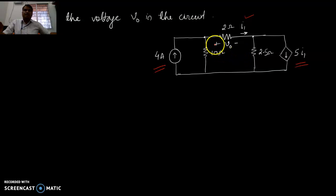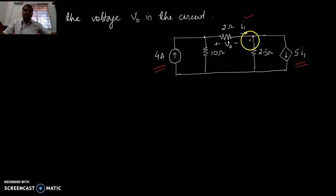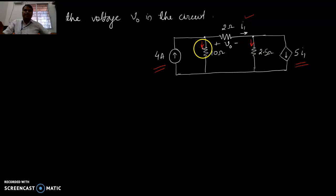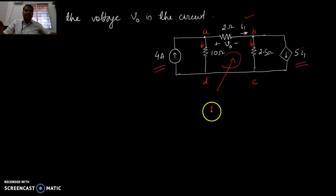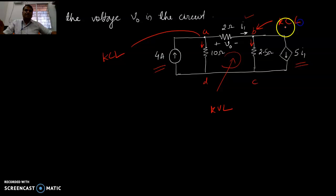You have been asked what is the voltage across this 2 ohm resistor. Because current I1 is given, you need to define another current here — name it I1 and I2. Name the nodes A, B, C, D and apply KVL. At node A you will apply KCL.